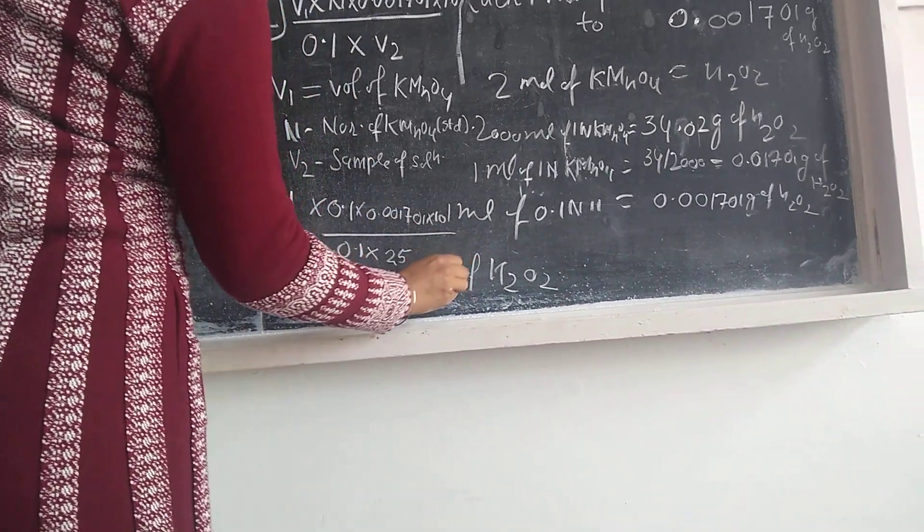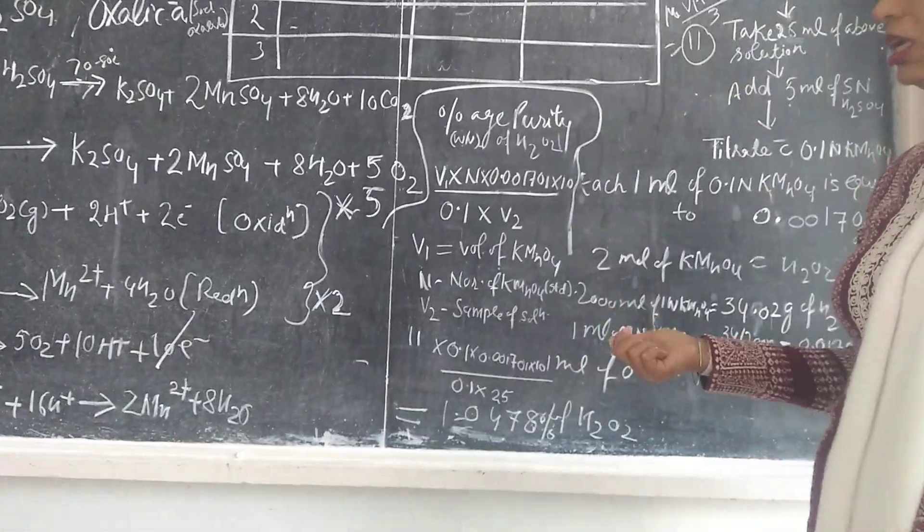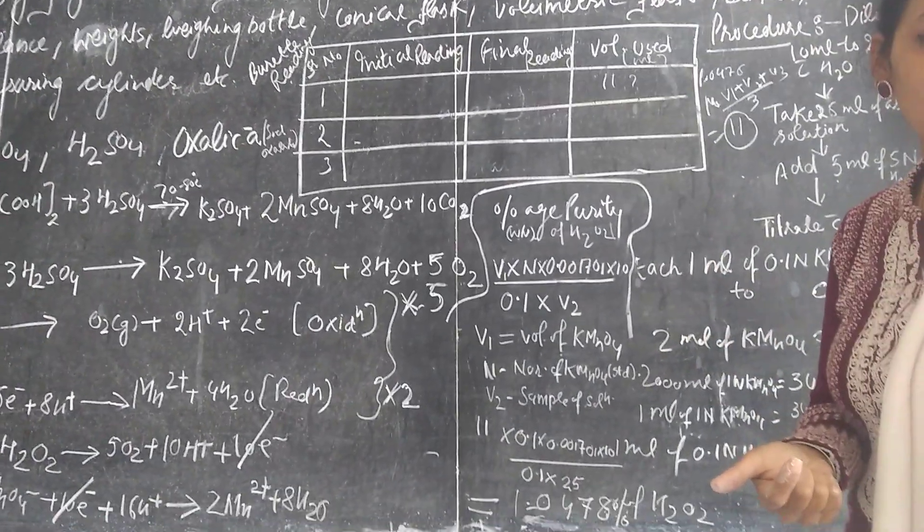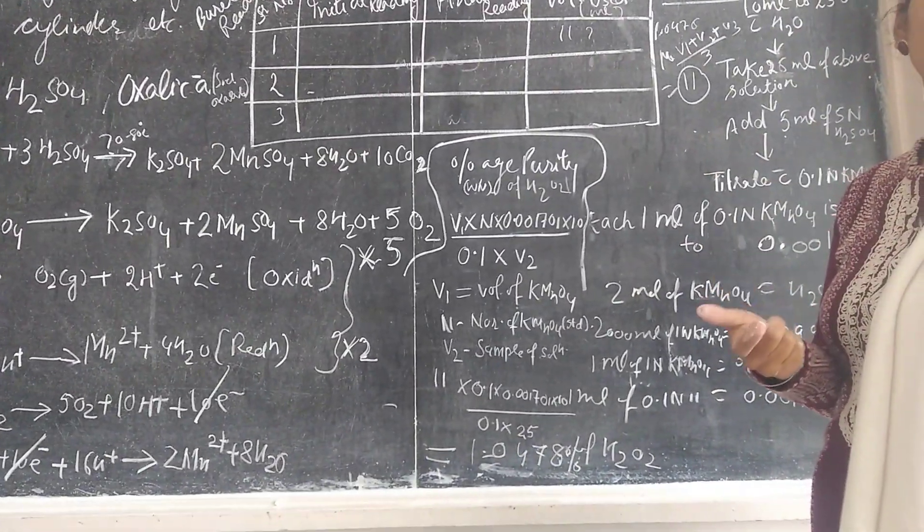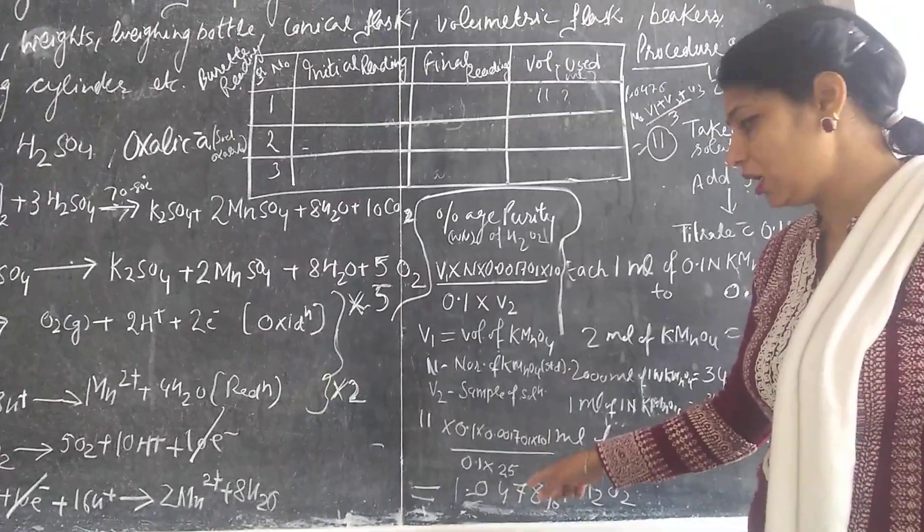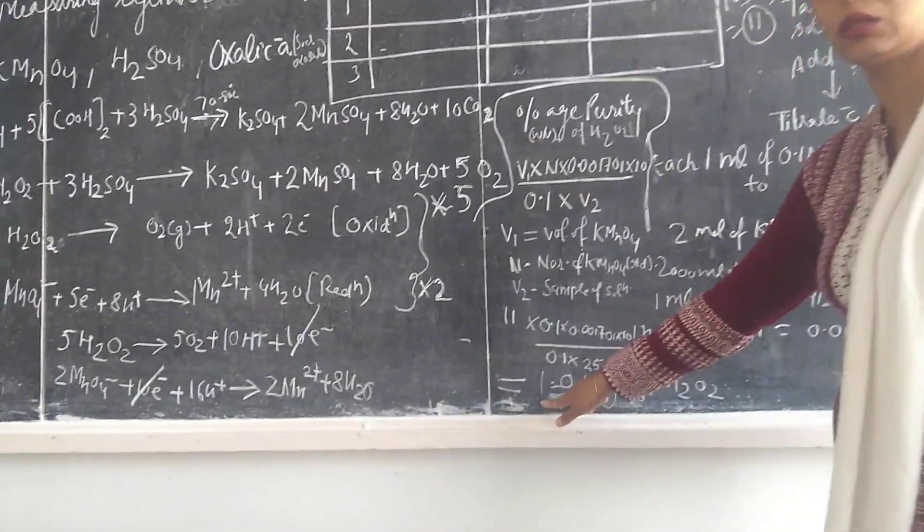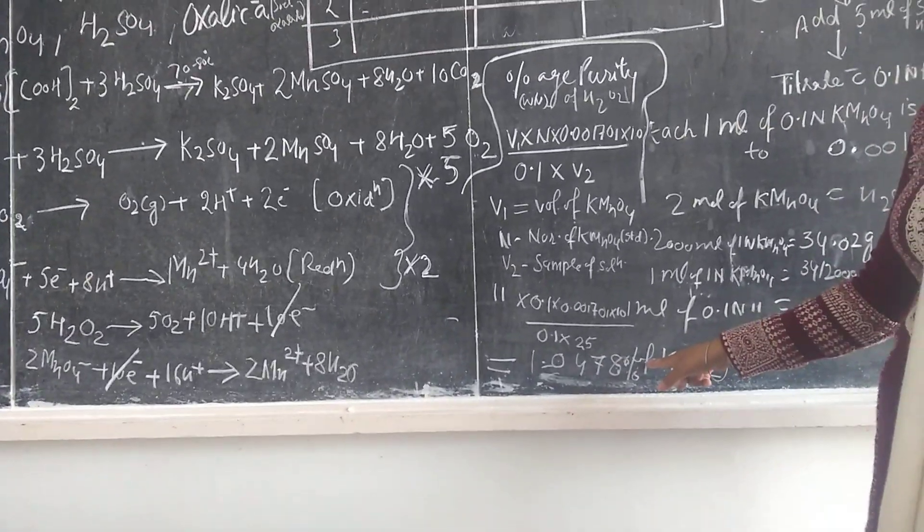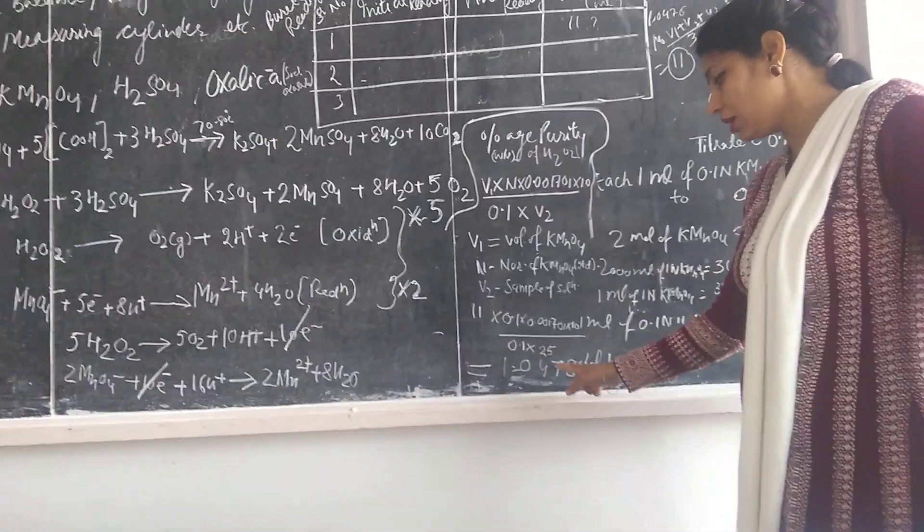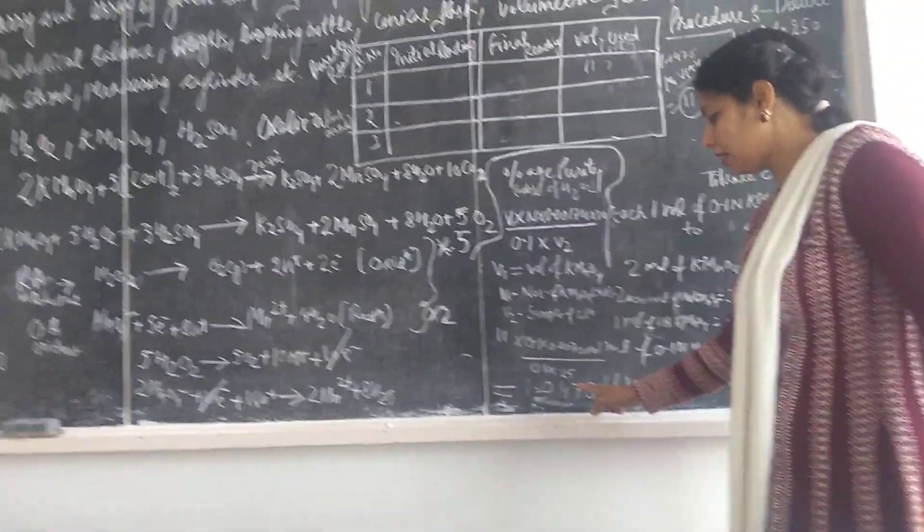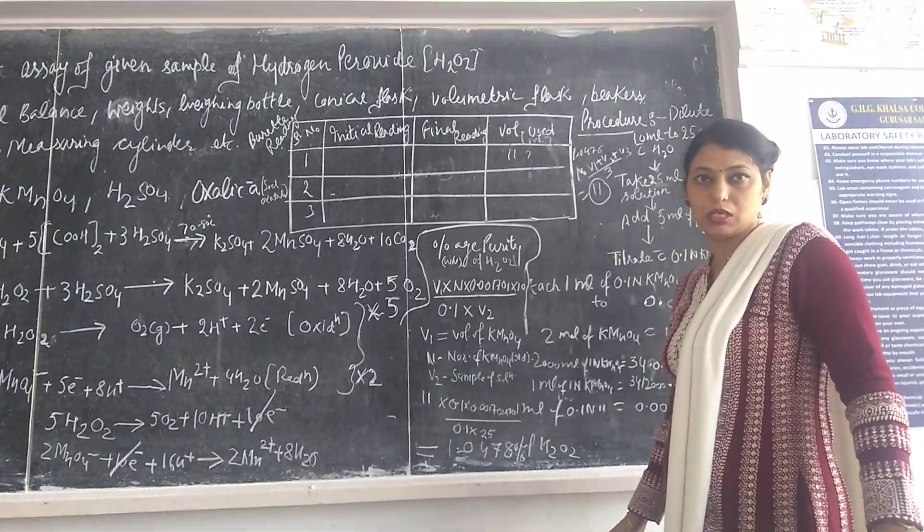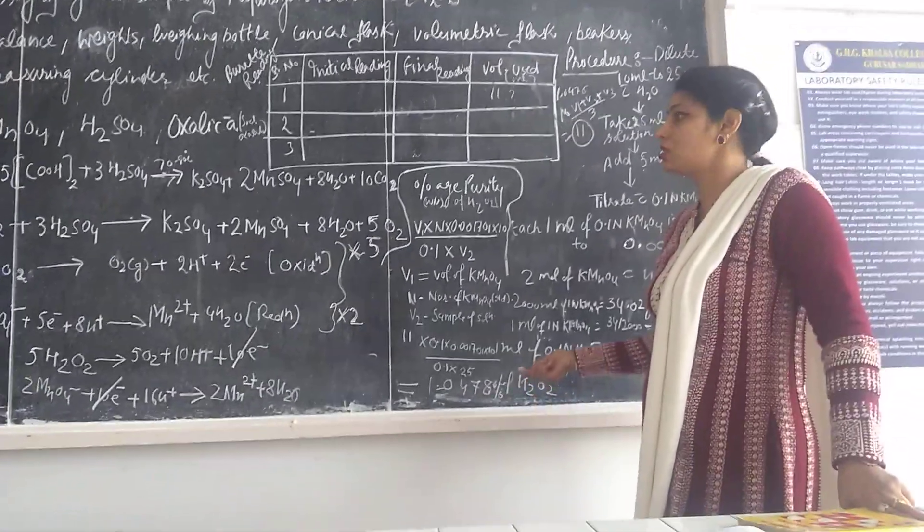If you put 11 in your percentage purity calculation, this comes to approximately 1.0478% of hydrogen peroxide, H2O2, which is percentage by volume weight. This is your percentage purity. The percentage of hydrogen peroxide solution is found to be this much. So if you get between 5 and 7 percent, that's within the acceptable range.